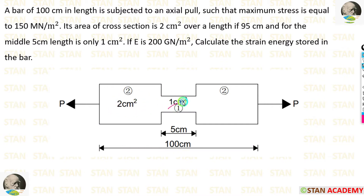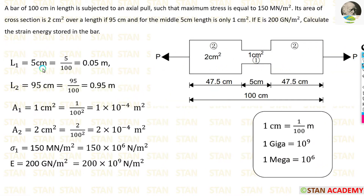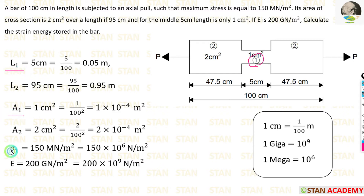For the middle portion I am keeping the area as 1, and for the other two portions I am keeping it as 2. In this problem we are first going to make unit conversions — converting everything in terms of meter. We have given numbers to the sections; the middle portion is number 1, so for this portion we have L1, A1, and sigma1.